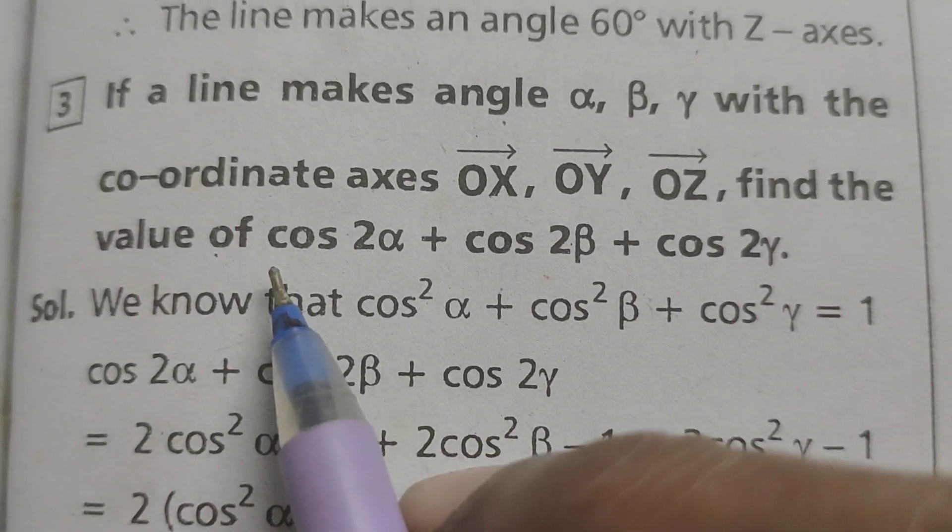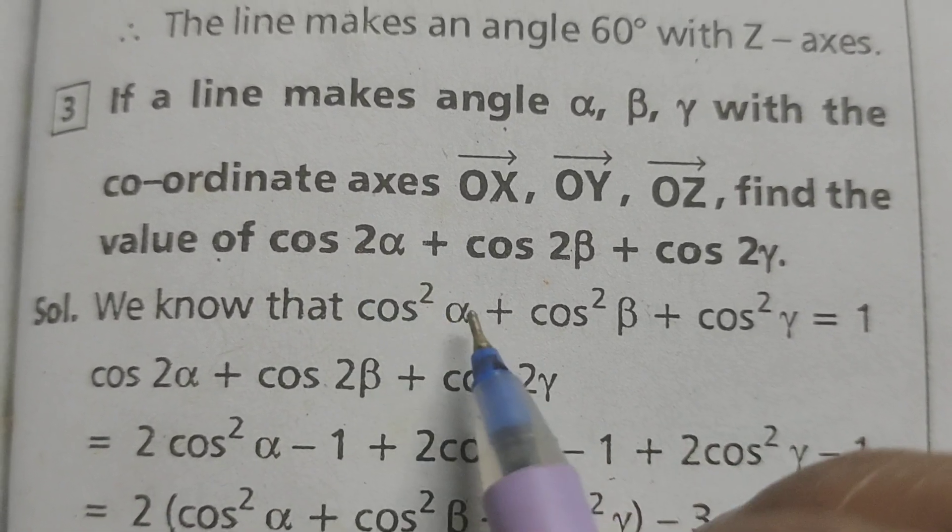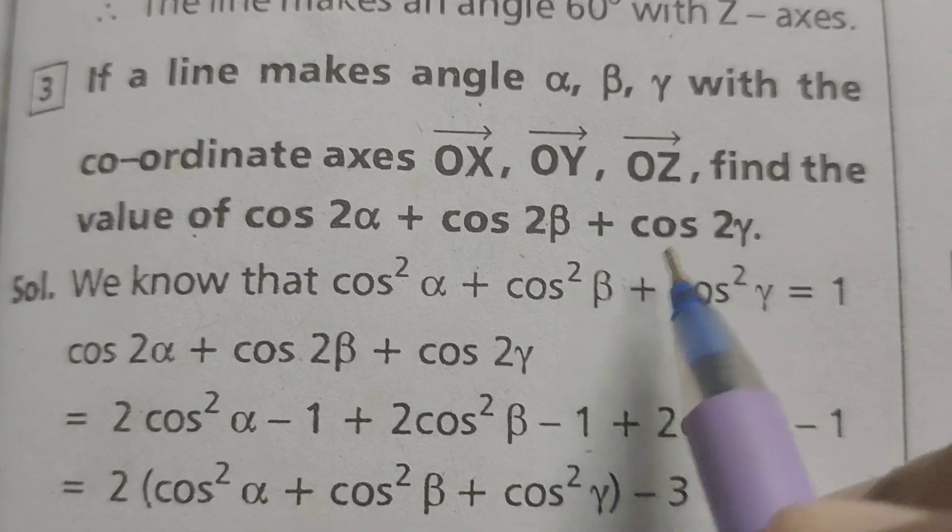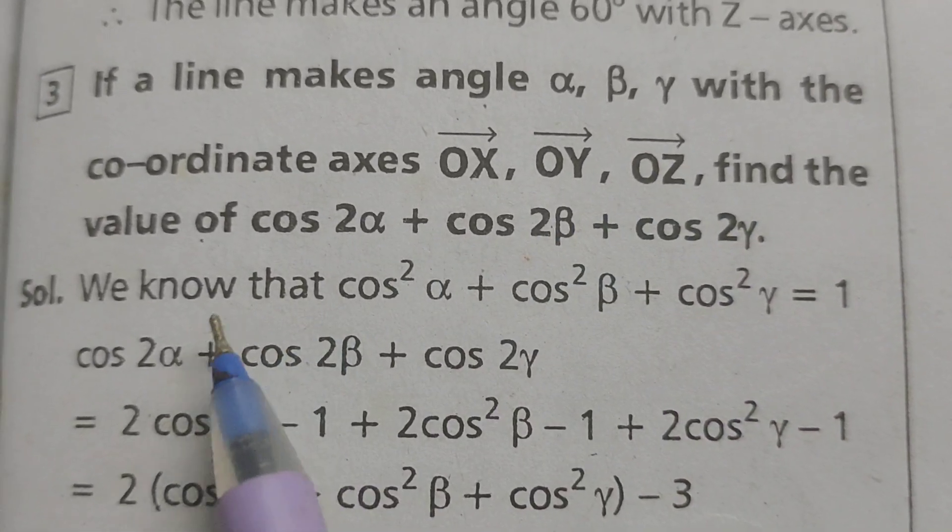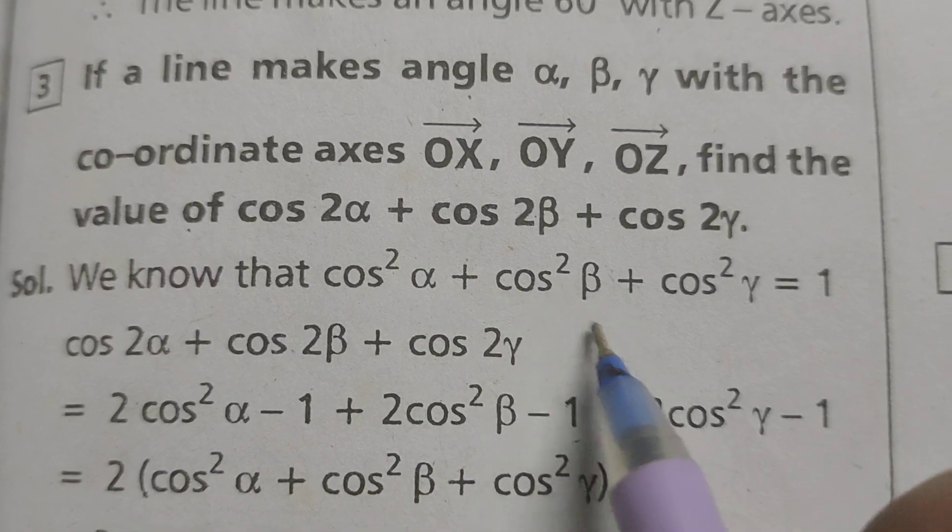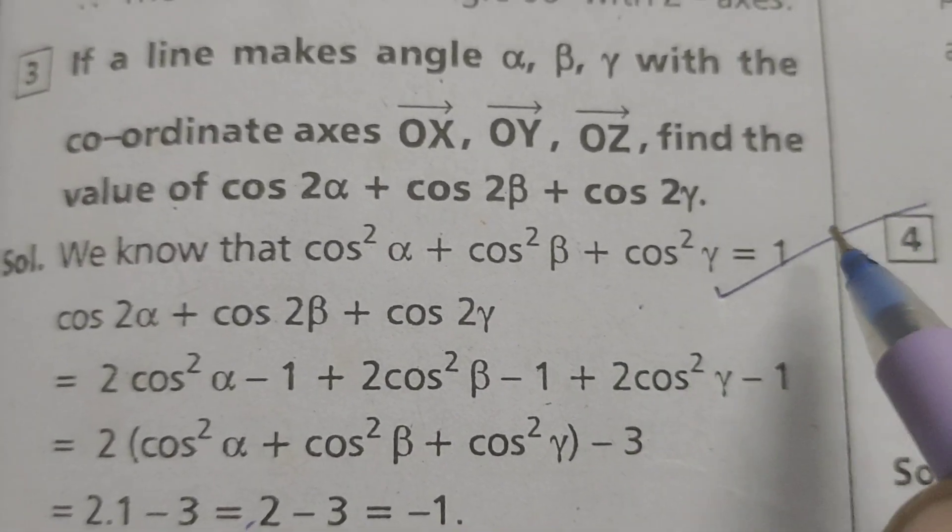find the value of cos2α + cos2β + cos2γ. We know that cos²α + cos²β + cos²γ equals 1.